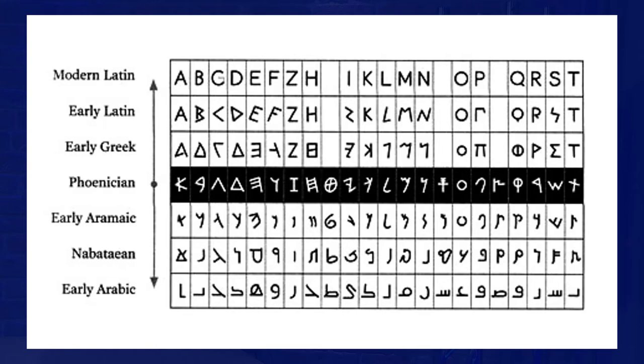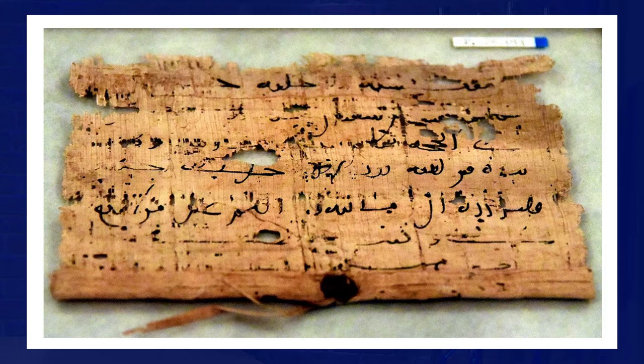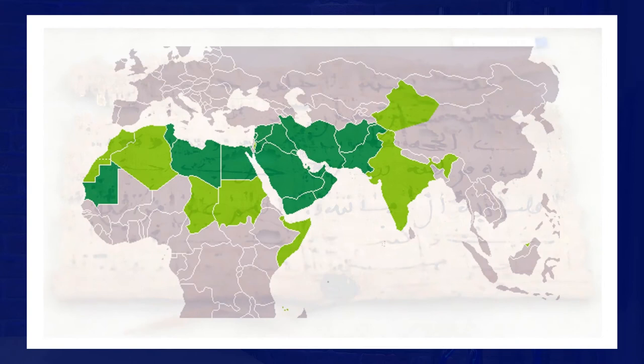For example, the shapes of the Arabic letters have been adapted with more flowing lines to make them easier to write with ink on papyrus.